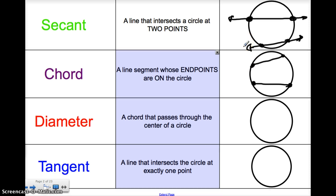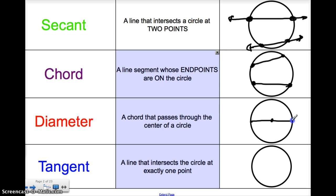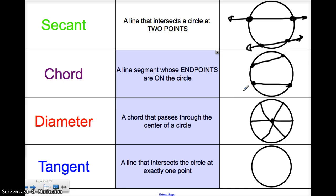A diameter is a chord, but it's a very special kind of chord because this chord goes through the center of the circle. So if this is my center right here, my diameter would have to go right through the center. That would be considered a diameter because it goes through the center of the circle. As long as it goes through the center, it's a diameter. Notice how all these lines go through the center.